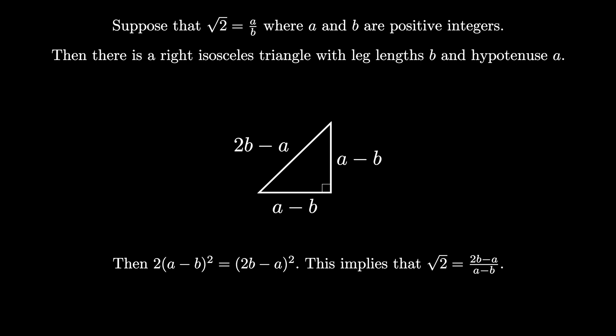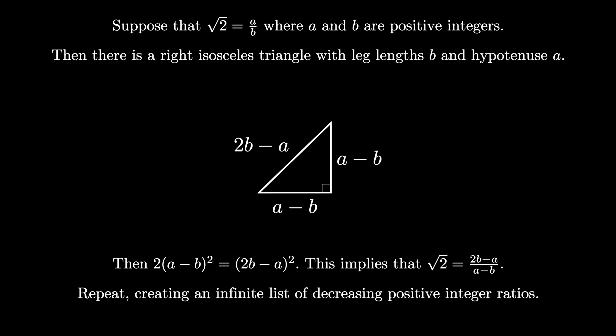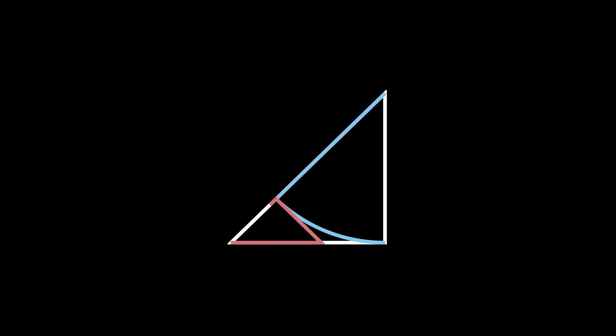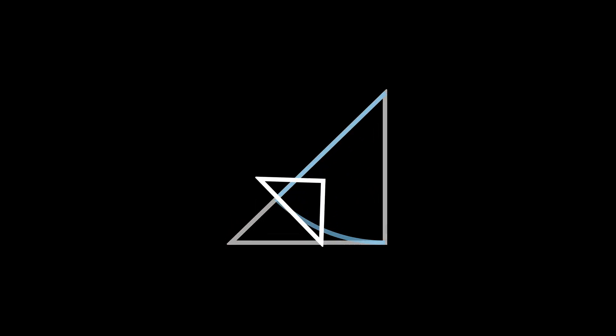But notice that this leaves us in the same position we started with. We can repeat the process, creating an infinite list of decreasing positive integer ratios. Sweep out one side of the triangle as a radius, creating a circular arc, splitting the hypotenuse into two pieces, and then create the sub-right isosceles triangle, zoom in, and repeat again. If we keep repeating this process, we keep creating smaller and smaller right isosceles triangles with integer side lengths. But we can't do this forever — you cannot have an infinite list of positive decreasing integers.